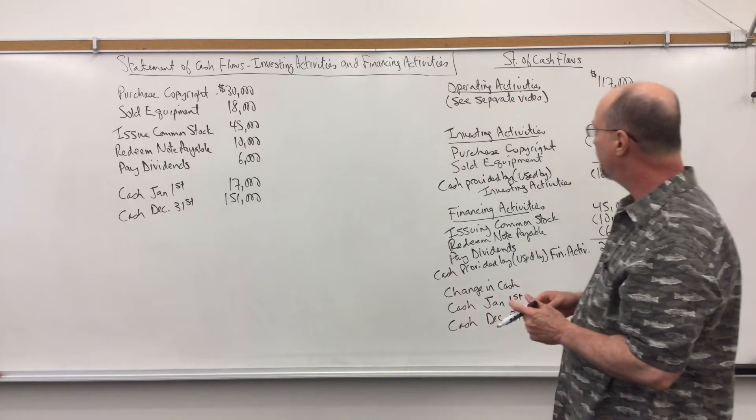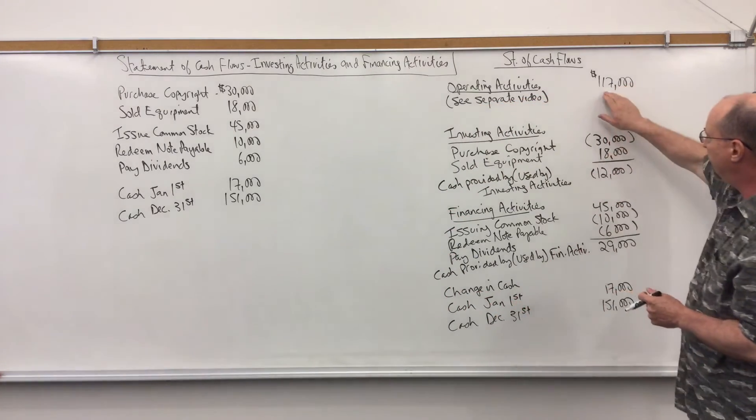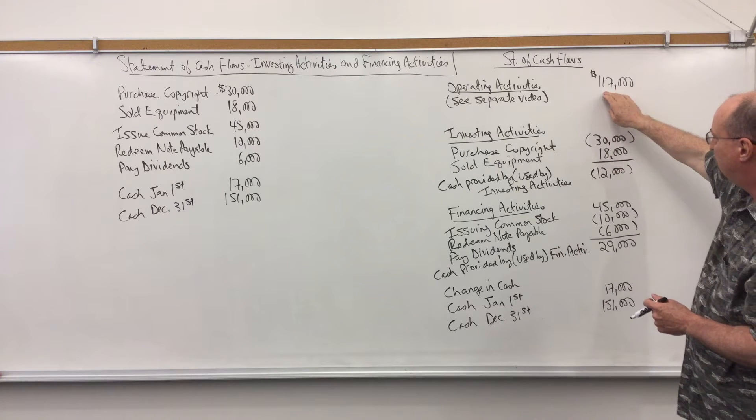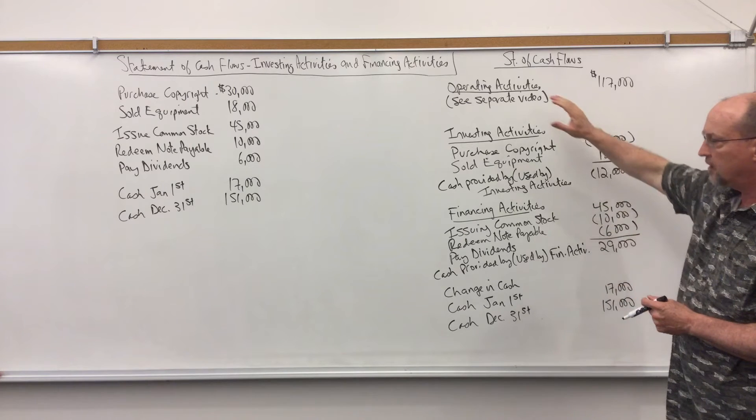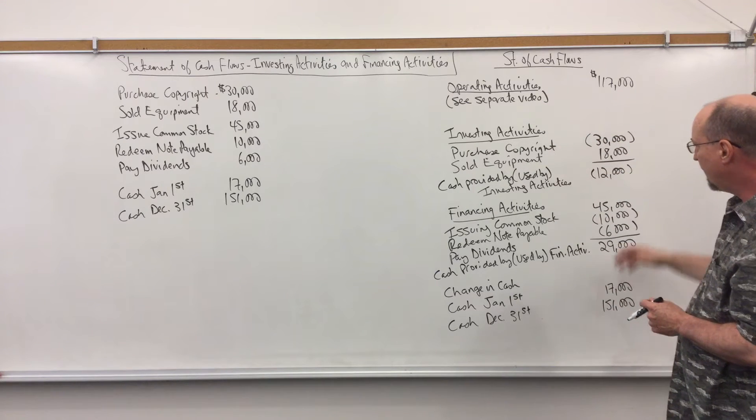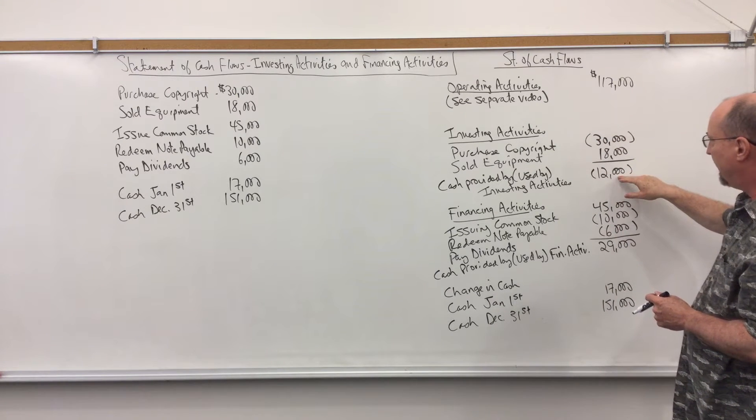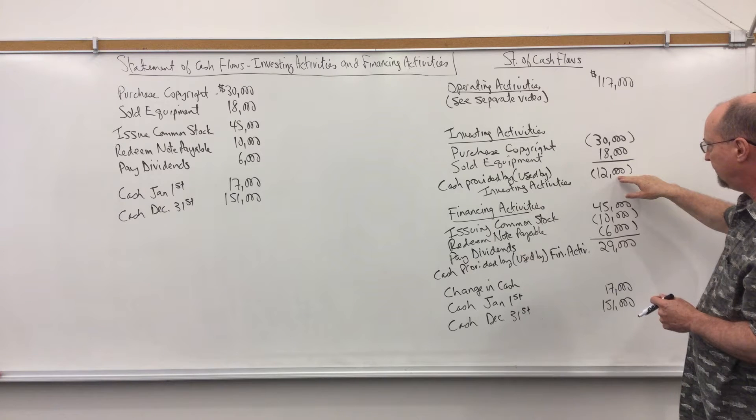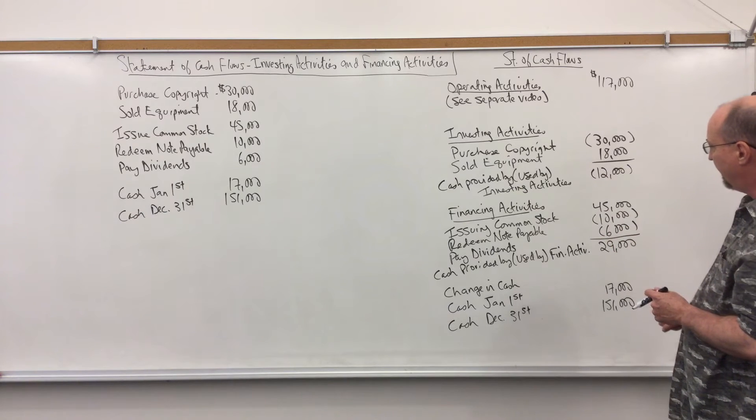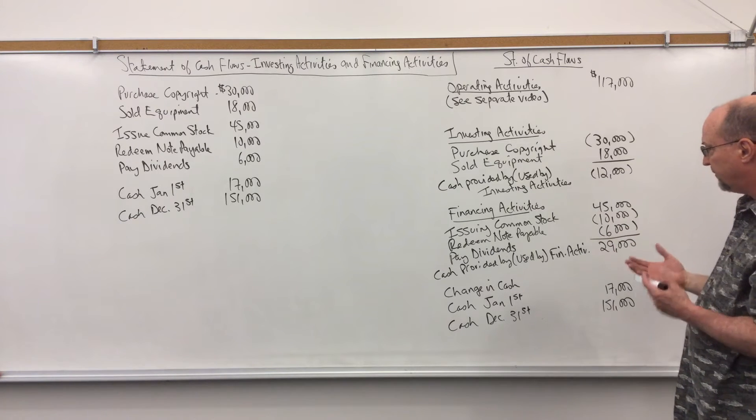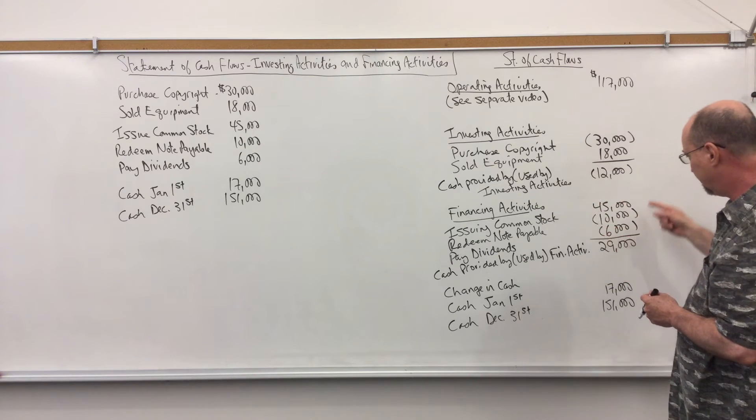In this case it increased by $134,000. Well my operating activities generated $117,000 cash. And again that's in a separate video. I used $12,000 cash in investing activities related to these two transactions. And then I generated $29,000 in financing cash from financing activities from these transactions.